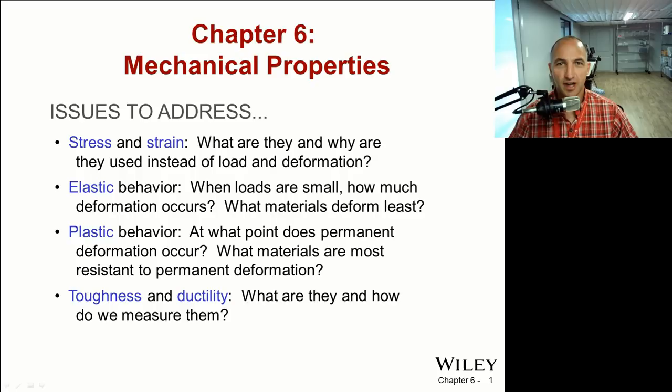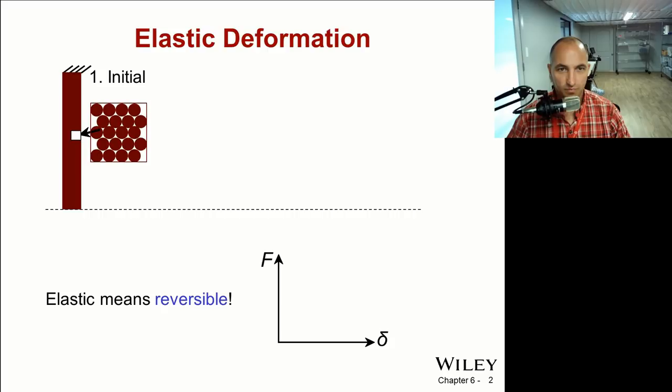Good afternoon everyone, this is Chapter 6 on mechanical properties of materials. Issues to address in this chapter: stress and strain, what are they and how are they used instead of load and deformation; elastic behavior, when loads are small how much deformation occurs and what materials are least elastic; at what point does permanent deformation occur and what materials are most resistant to permanent deformation; and finally toughness and ductility, what are they and how do you measure them. So let's get started with elastic deformation.